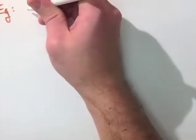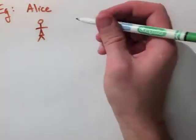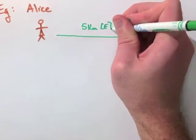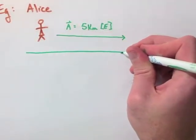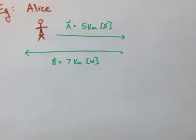For our first example, we're going to look at Alice walking in two directions. She's walking east, and then she's walking back west. So she starts out walking 5 kilometers to the east, let's call that vector A. Then she walks 7 kilometers back to the west, let's call that vector B.